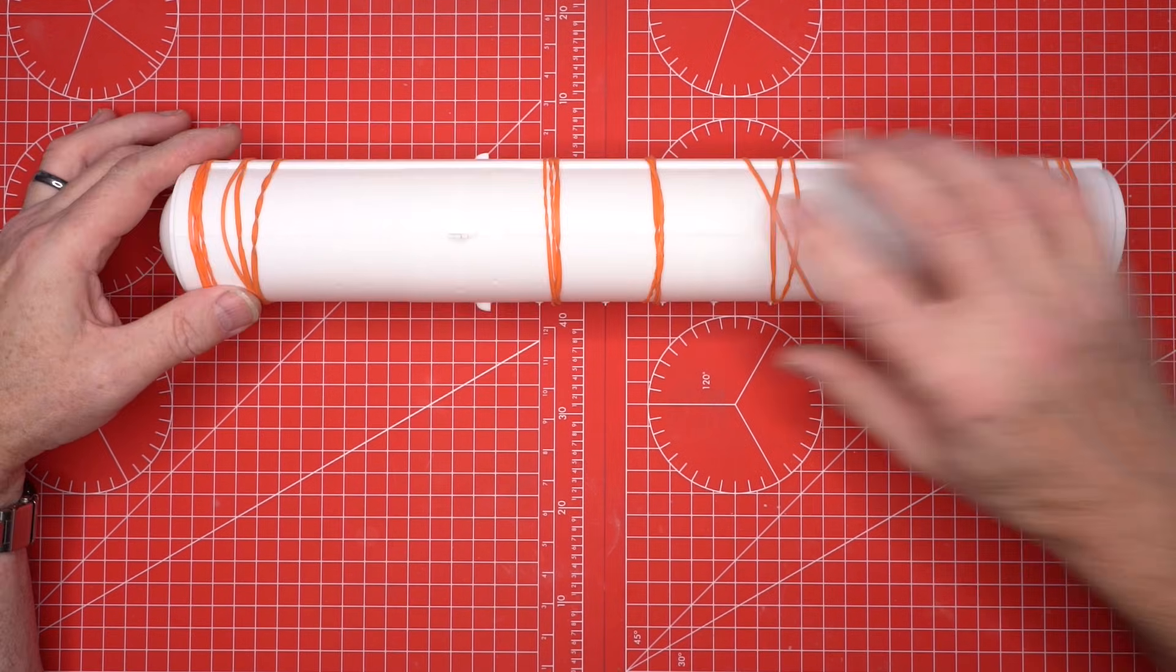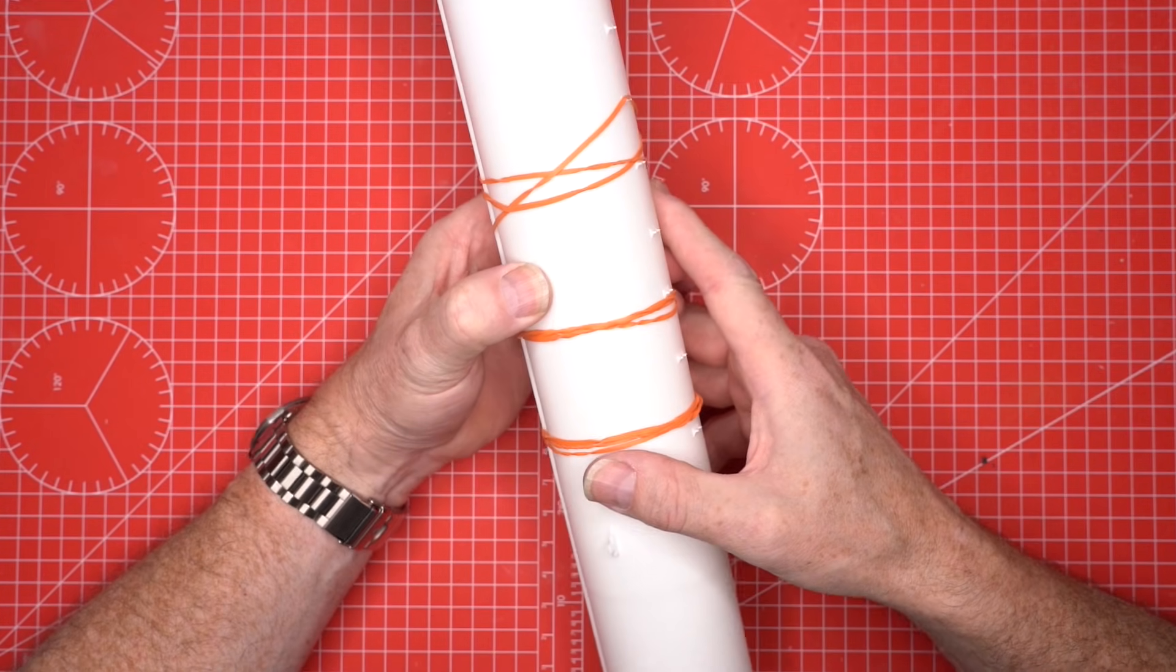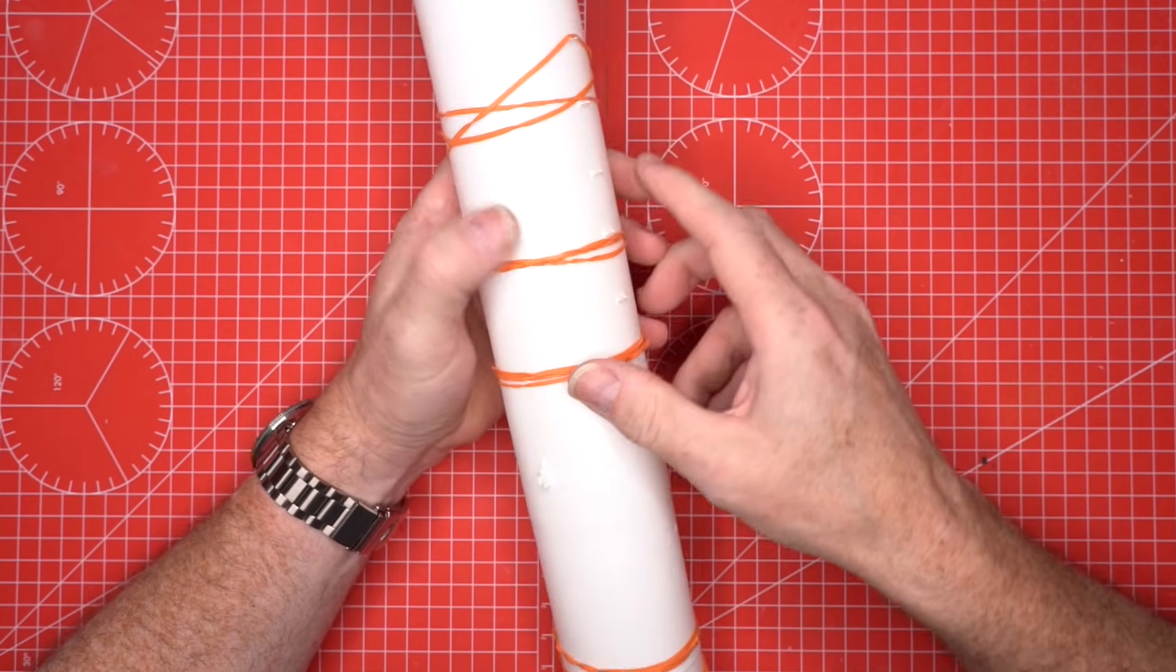We glue a little at a time, working around the circumference so the seam stays aligned. We clamp the tube gently and check the seams as it sets. This is the backbone of the rocket, so we let it dry fully.